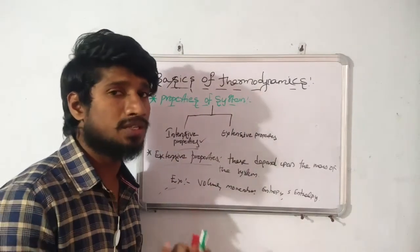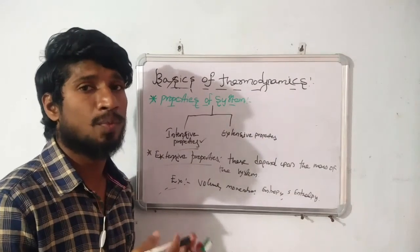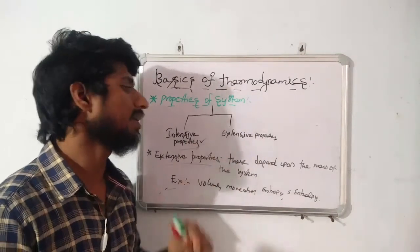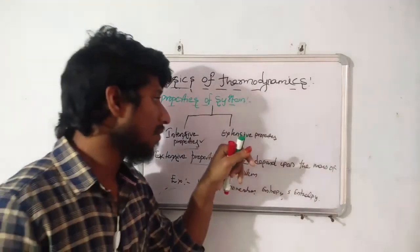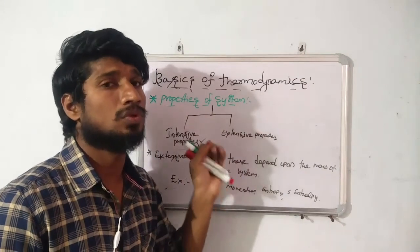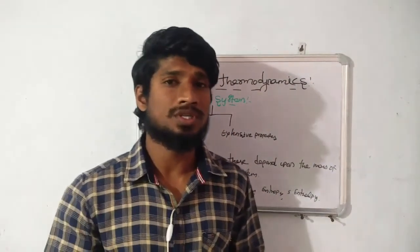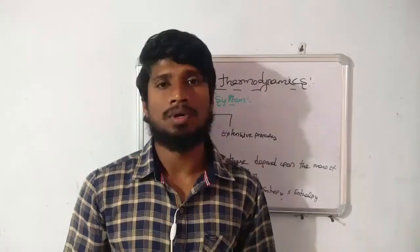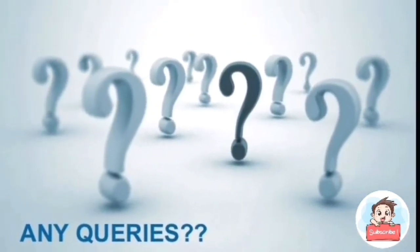One more important point about intensive and extensive properties: when there is no change after dividing the properties, they are called intensive properties. In the case of extensive properties, which are opposite to intensive properties, when we divide them, changes will be observed. This is about the properties of the system. In the next class, we are going to discuss some more concepts related to thermodynamics. Thank you, and if you have any queries regarding this lecture, please comment in the comment box.